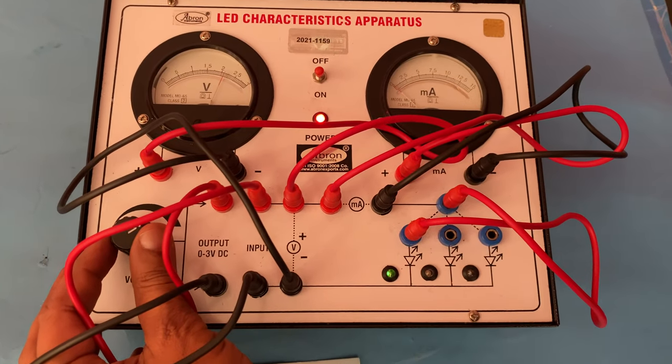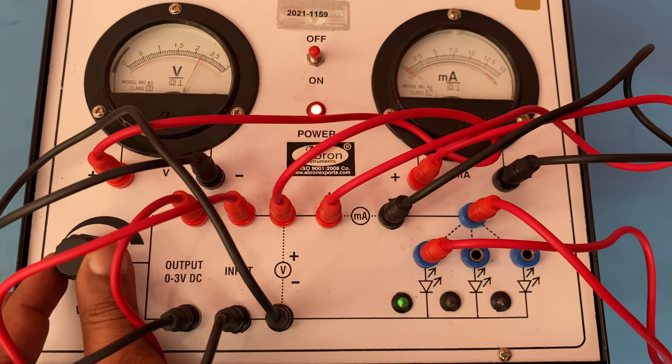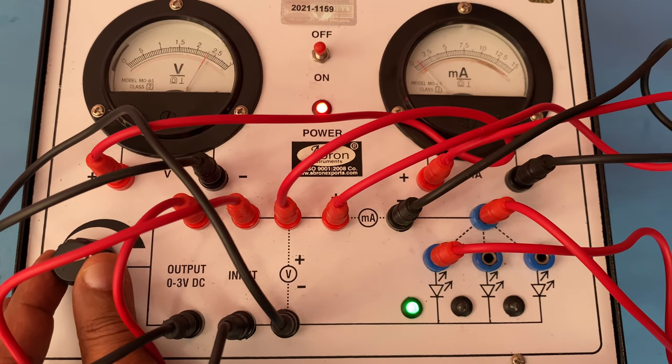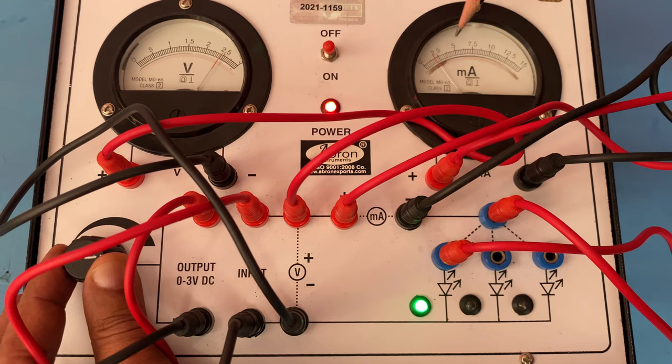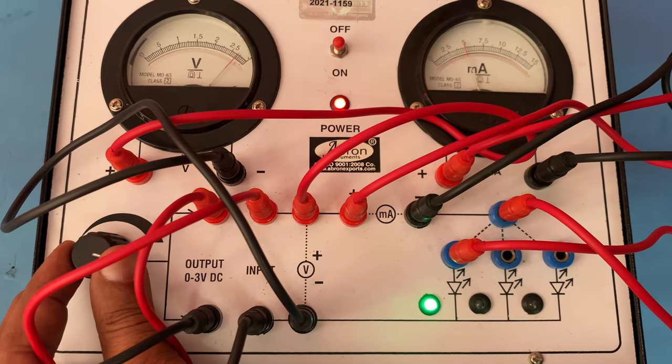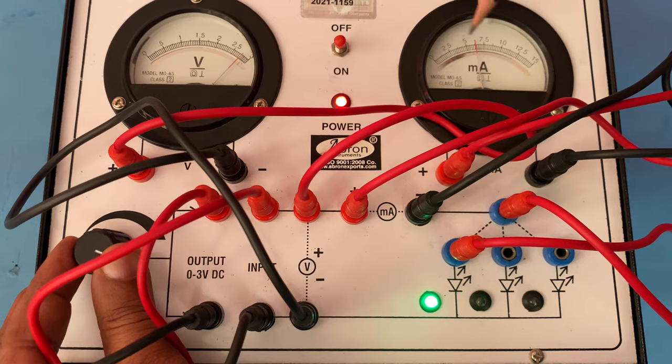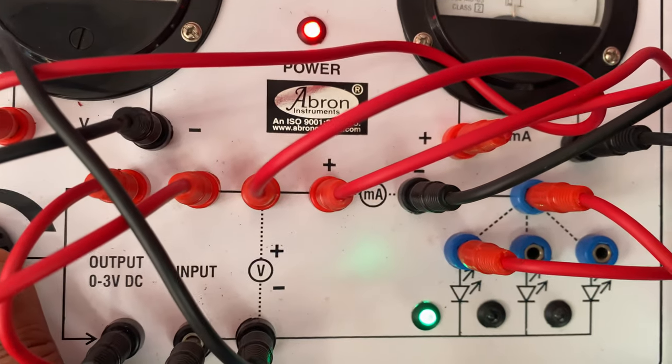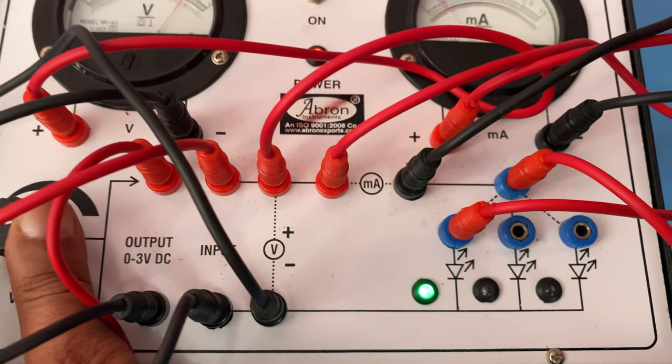Now green light is starting to come. See this, green is coming and how much current is there - very little current. Now I can increase it to 2.5 volts, the current is 2.5 milliampere. I can increase it to 3 volts, current is 7.5 milliampere. Brightness has become very strong, you can see this.